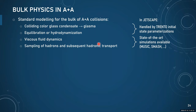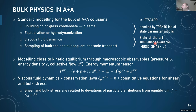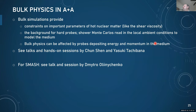Not saying much about bulk physics since there are dedicated talks. The standard model for the bulk of AA collisions has: an initial phase handled by TRENTO in JETSCAPE, which is an initial state parameterization propagated to some initial time for hydro; then viscous fluid dynamics; then hadronic transport. JETSCAPE has state-of-the-art simulations available: MUSIC and SMASH, with other hydro codes becoming available too. A paper in preparation provides a well-tuned background for hard probe studies. Talks on hydro by Chun and Yasuki — Yasuki will specifically address back-reaction from jets onto the bulk, a new frontier. A talk on SMASH by Dmitry Olichenko.